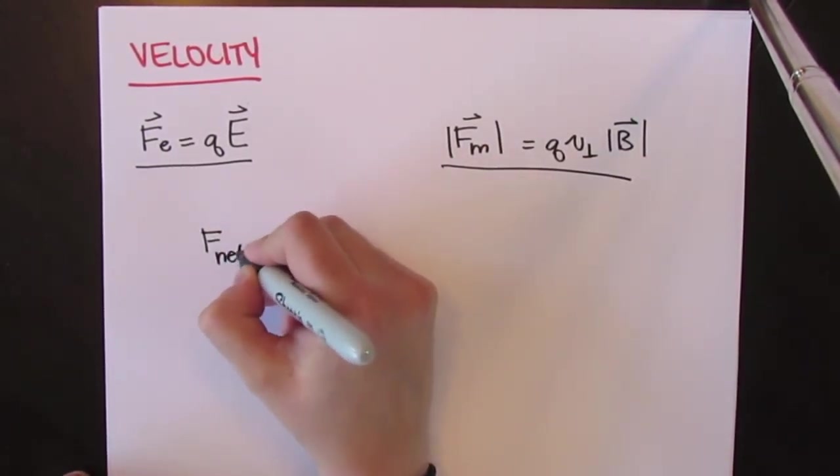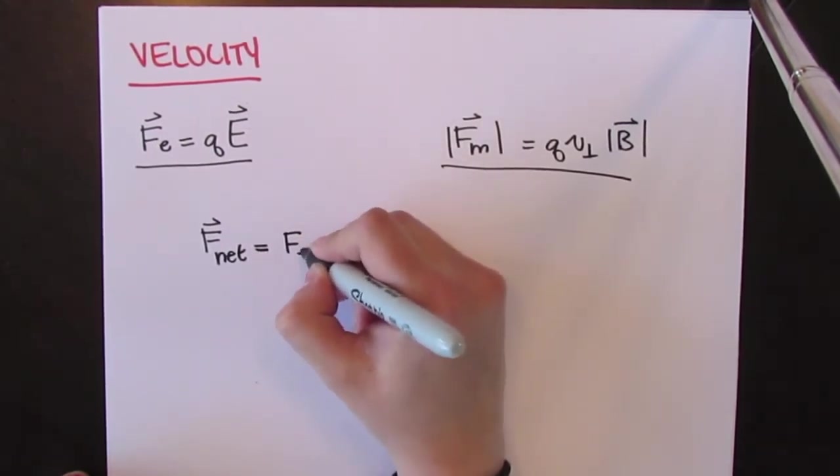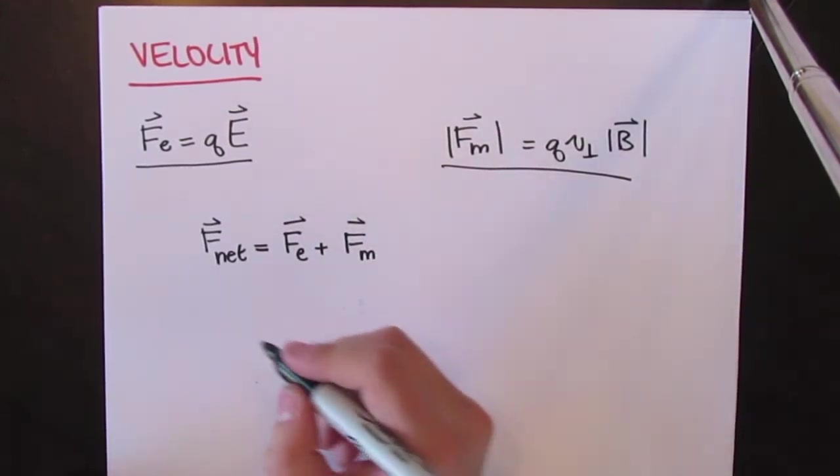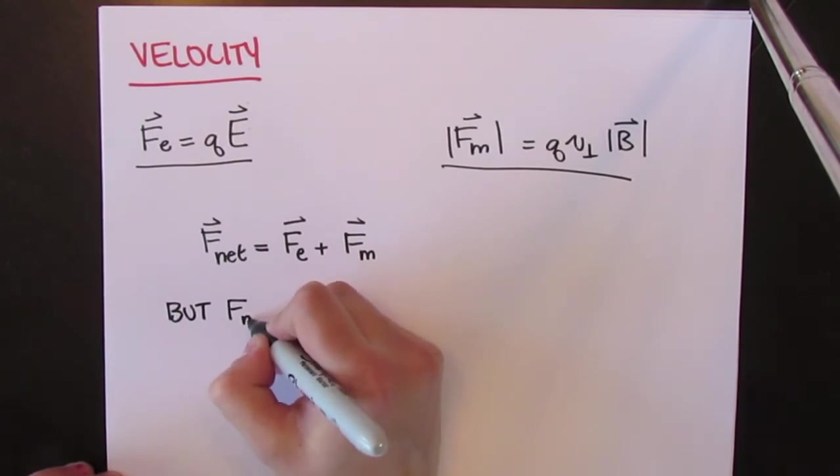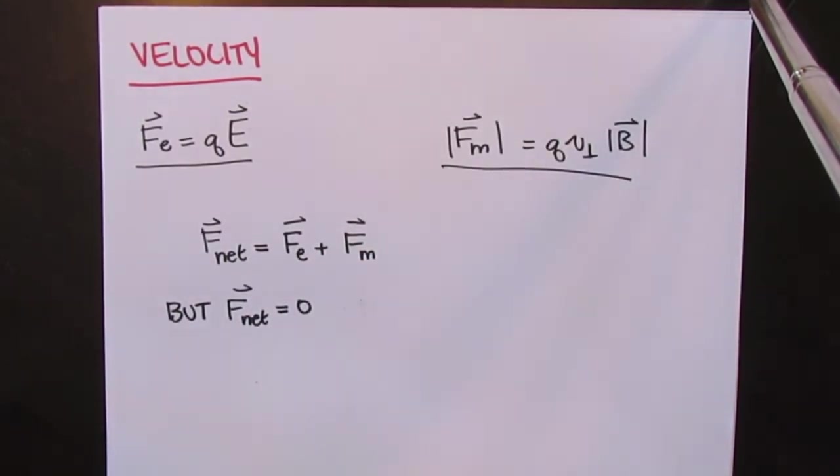The net force experienced by the electron, then, was the electric force added to the magnetic force. Since magnetic and electric fields are perpendicular to each other, the net force acting on the charged particle is equal to zero.